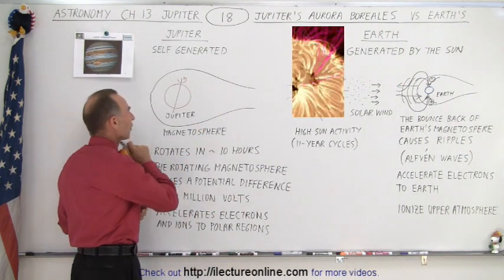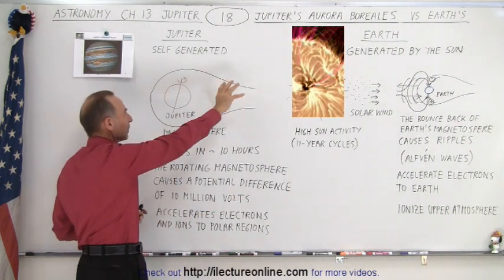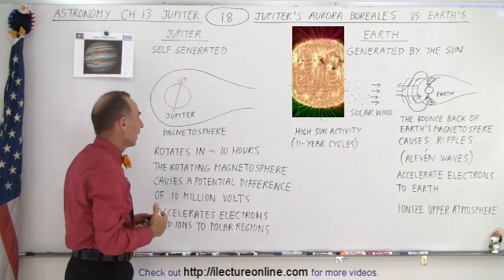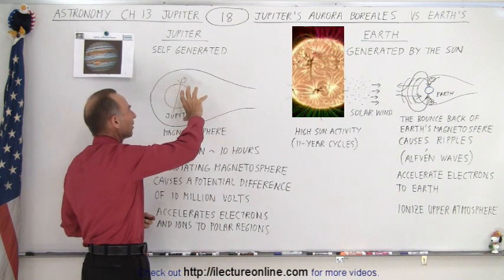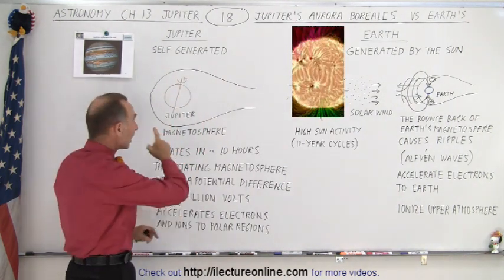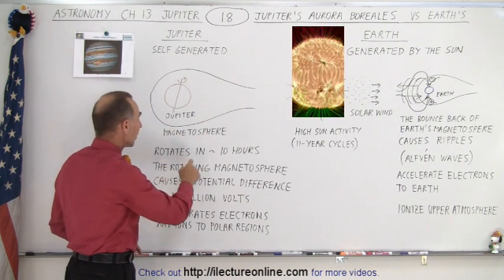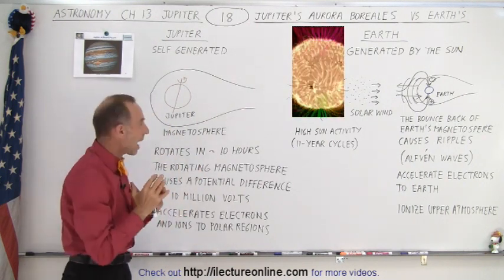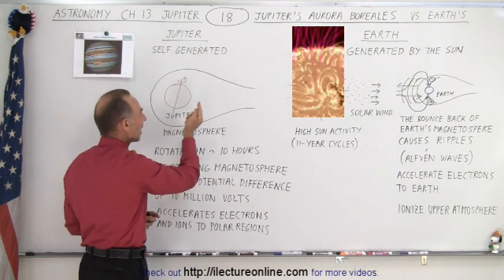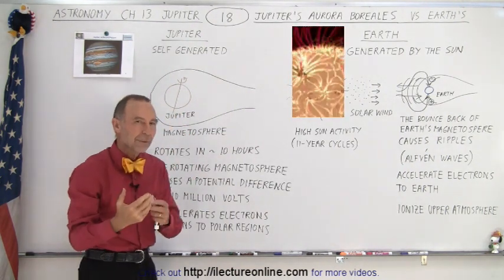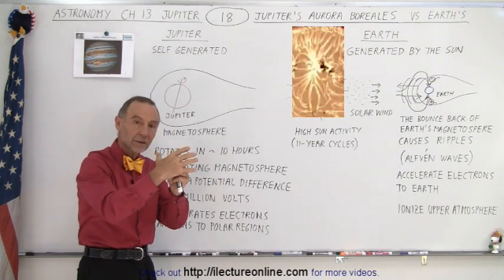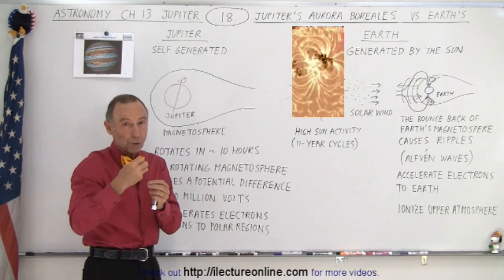Jupiter, however, is very different. The magnetic sphere around Jupiter is much larger and much stronger, giving us an enormously strong magnetic field. It's also around a giant planet that rotates at a very high rotational rate — less than 10 hours per rotation — so this whole magnetic field gets rotated at very high velocities. Whenever we have a moving magnetic field and it passes by particles, those particles feel an enormous amount of force.